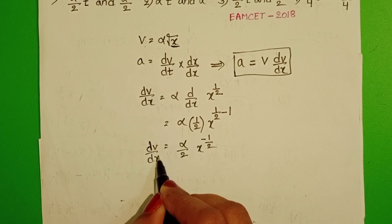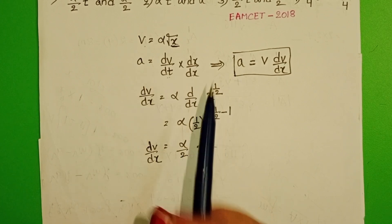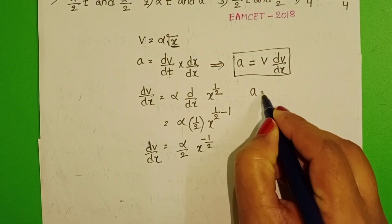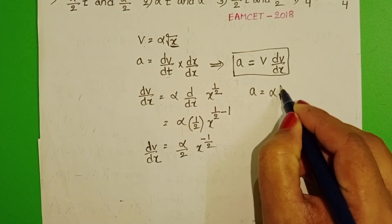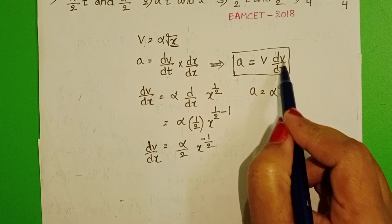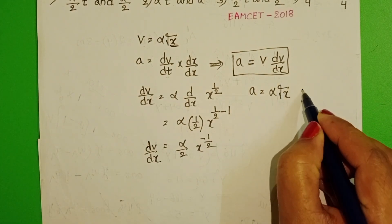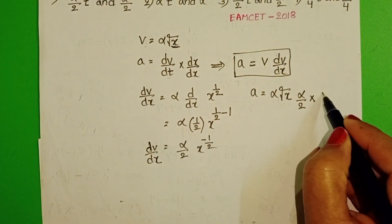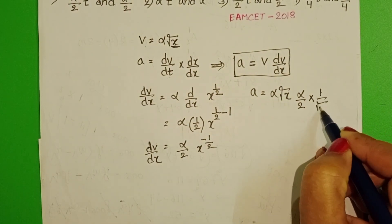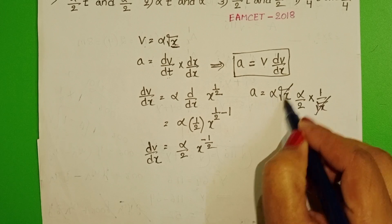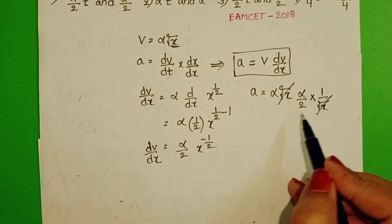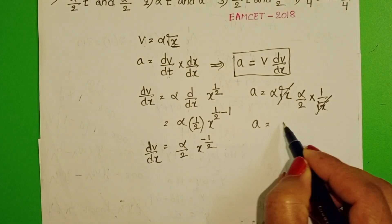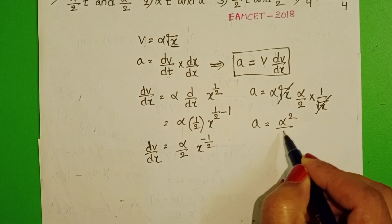dv by dx. Now take the formula of acceleration. A equals alpha root x. In place of dv by dx, substitute alpha by 2 into x power minus 1/2, which is 1 by root x. Root x cancels. Then acceleration equals alpha square by 2.